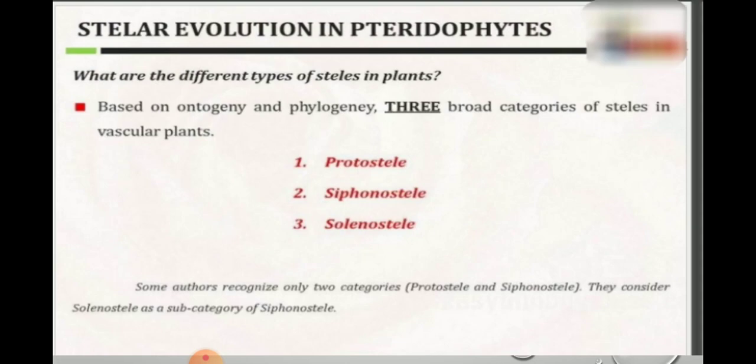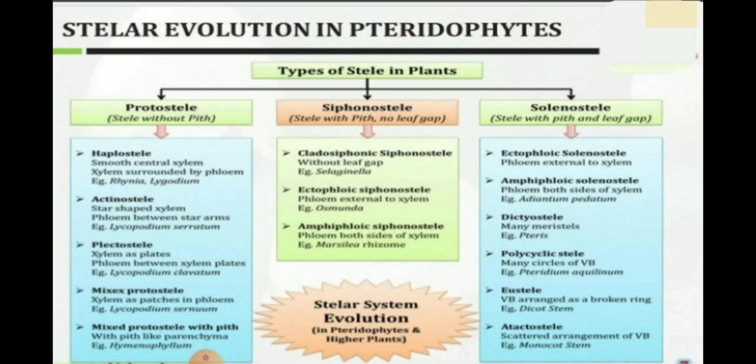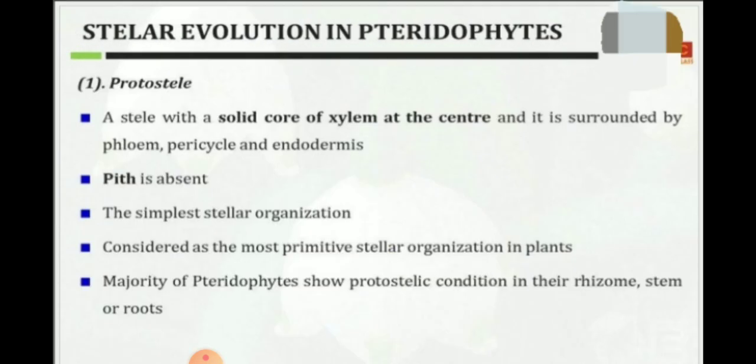Based on ontogeny and phylogeny, stele is divided into three types: Protostele, Siphonostele, and Solanostele. Stele without pith is called protostele. Stele with pith and without leaf gap is called siphonostele. Stele with pith and leaf gap is called solanostele.